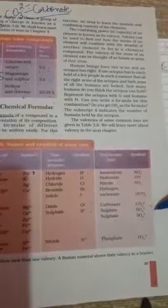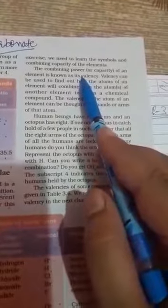silver Ag+, sulfide S2-, sulfate SO4 2-, phosphate PO4 3-. So we have to learn these symbols and combining capacities.